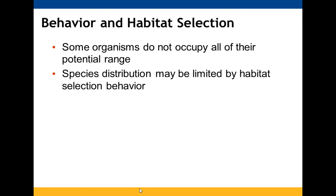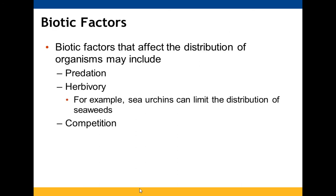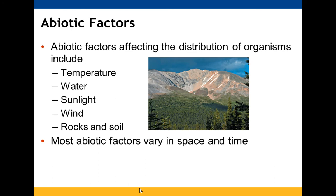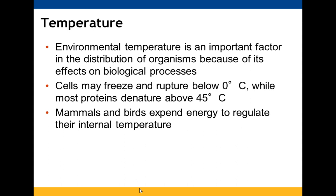Organisms don't necessarily occupy all of their potential range. Habitat availability plays a role, as do biotic factors such as predation, herbivory, and competition. Key abiotic factors include temperature, water, sunlight, wind, rocks, and soil, which vary by location and time. Temperature is critical because below 0 degrees Celsius, cells — which contain lots of water — can freeze and rupture. Above approximately 45 degrees Celsius, proteins, including enzymes, can become denatured and no longer function properly.